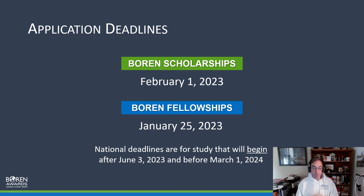Your program can't start before June 3rd, 2023, because we have a mandatory in-person orientation in Washington, DC — we pay for it, it doesn't come out of your award, but you have to be there. So if you're applying for an early summer program, be aware that it should start sometime after June 3rd. You can start as late as March 1st, 2024. Most Boren recipients start somewhere between summer and fall — about 92% study somewhere between summer and fall.